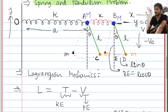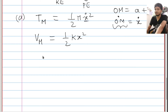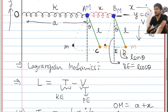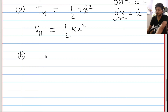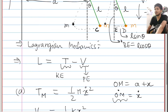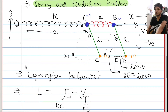Now when we come to mass small m, things get a little tricky, because the motion is not only in the x direction but also in the y direction. When particle small m moves from left to right, it moves in the x direction but also changes its position in the y direction. So the kinetic energy must account for both directions. The x position of small m from origin O will be (a + x + L sin theta).